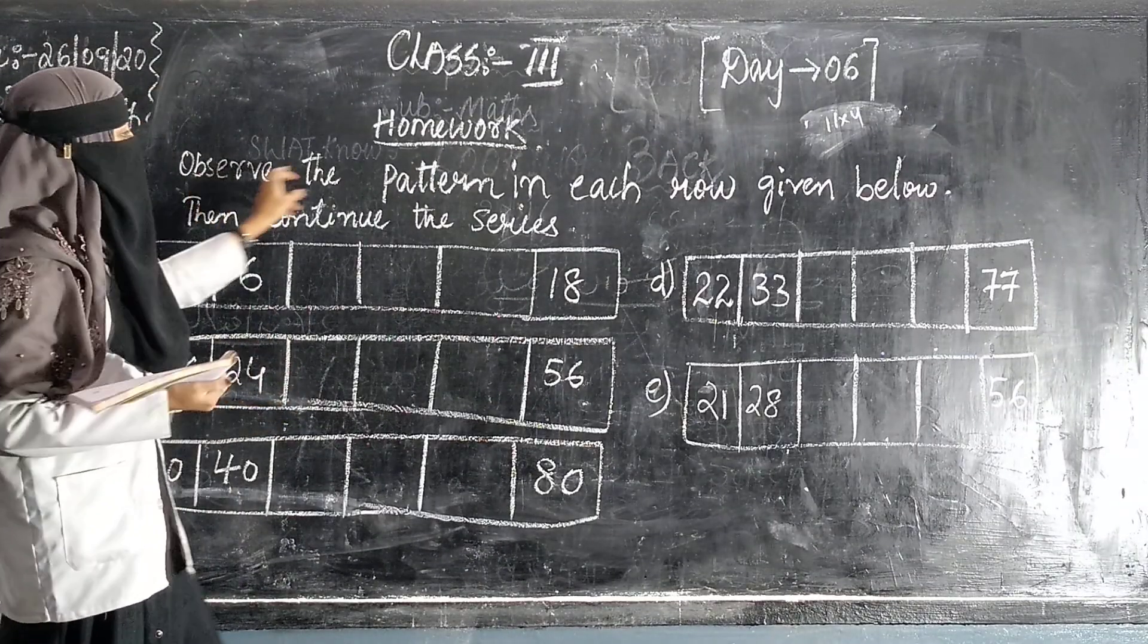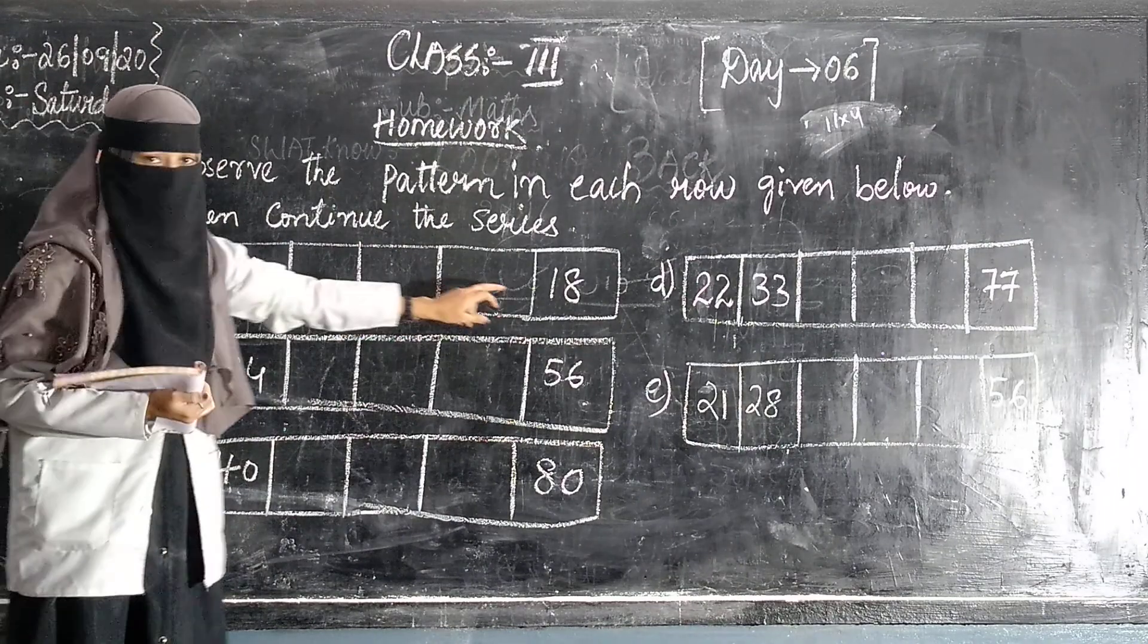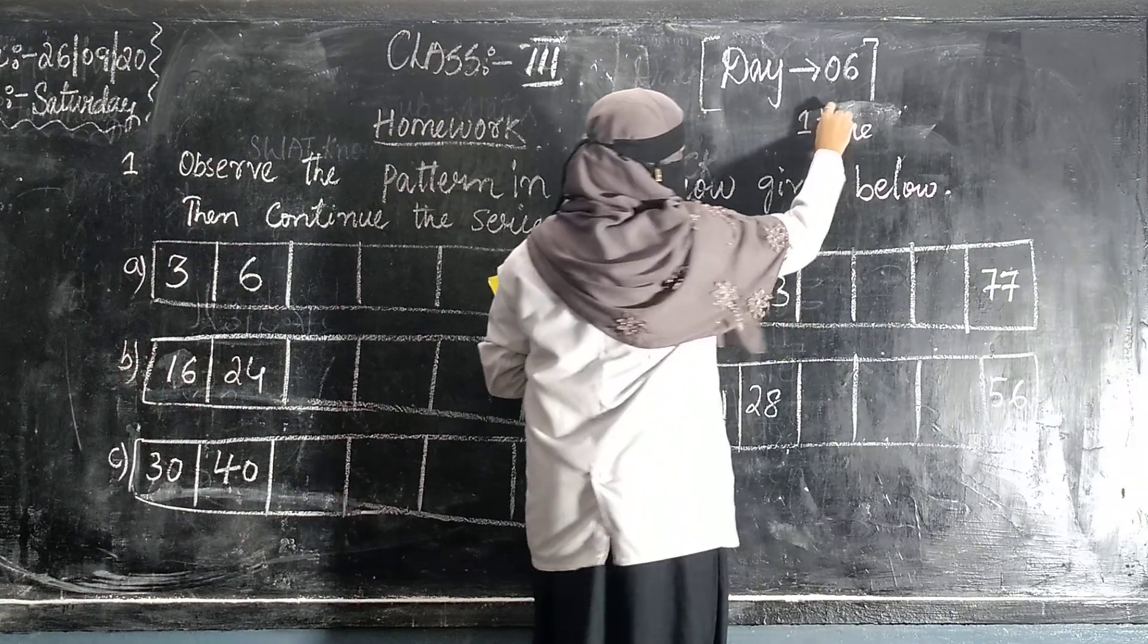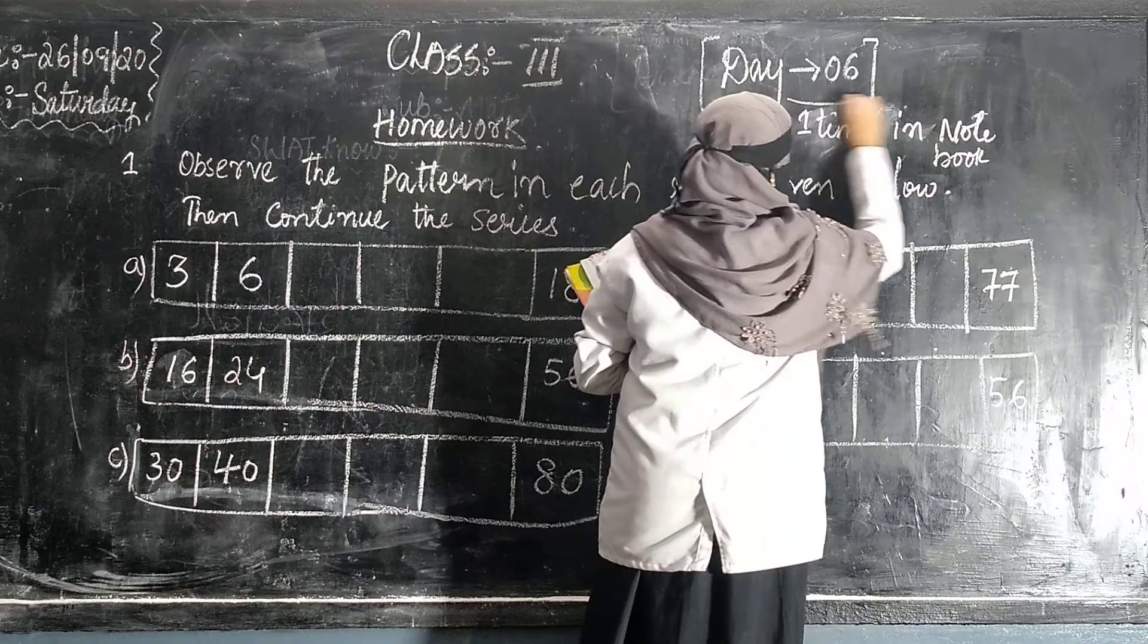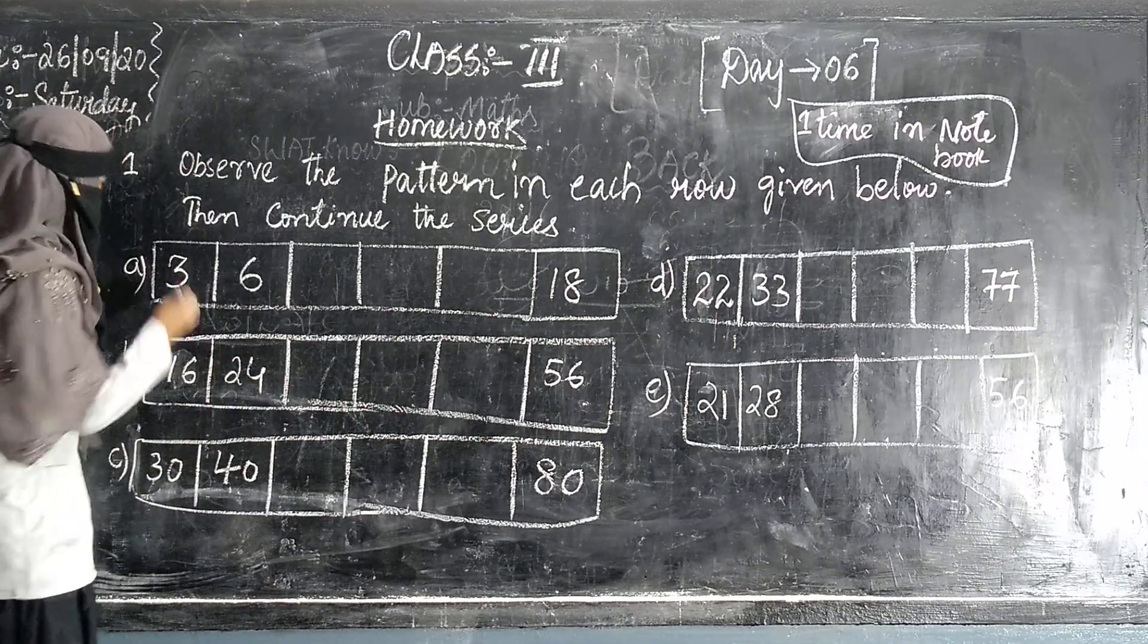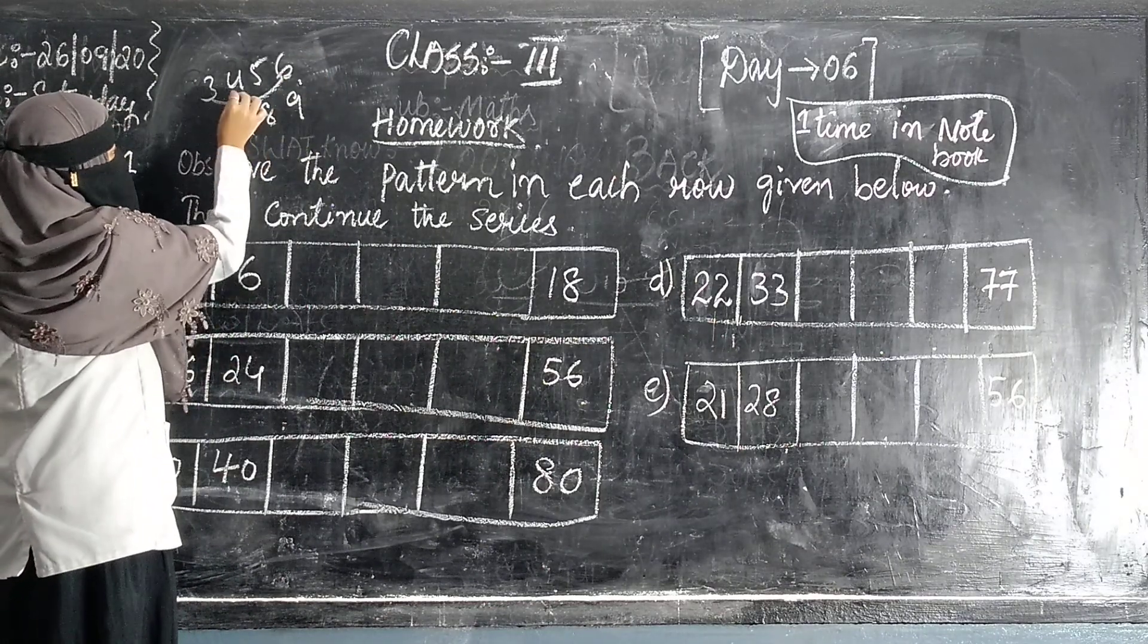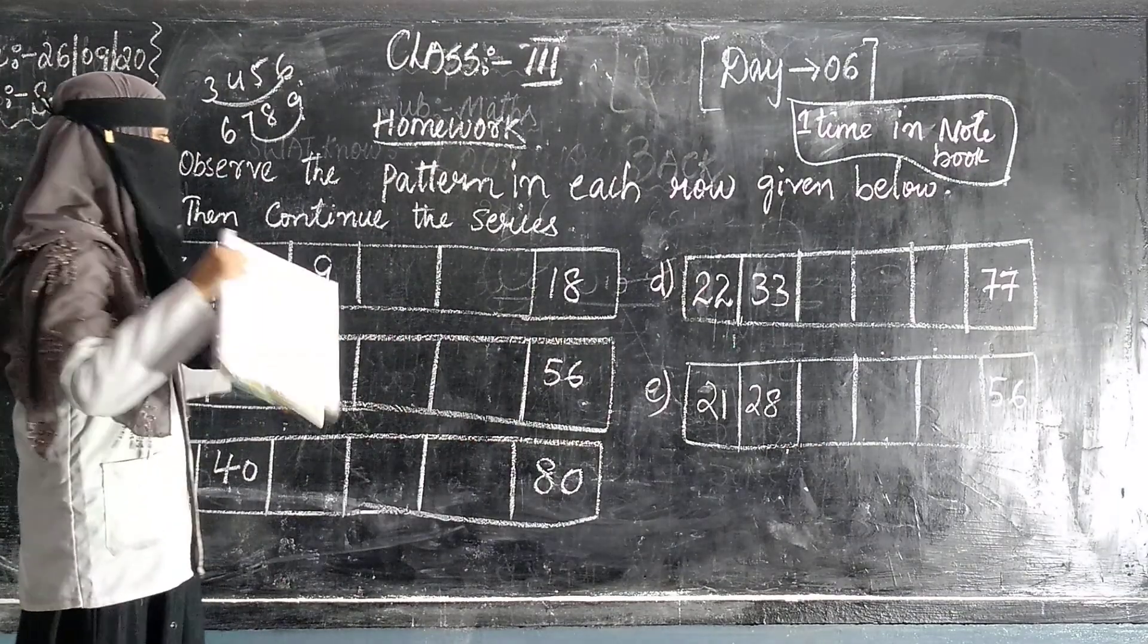Now it's time for homework. Observe the pattern in each row. Given below, then continue the series. Here we go. First: 3, 6. Copy and write in your notebook. The pattern is 3. So 6, 7, 8, 9. 1, 2, 3. So the answer is 9. Like that you have to solve this pattern.